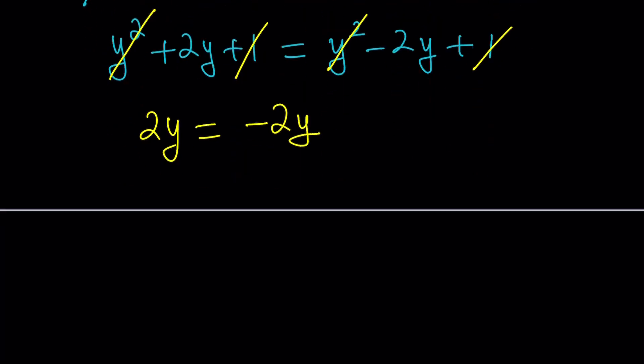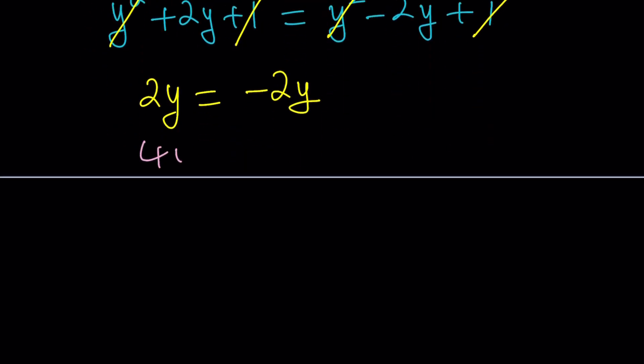So let's add two Y to both sides. That gives us four Y equals zero. Divide by four. Dividing by four or any other number is always safe because it's not a variable. So Y equals zero.